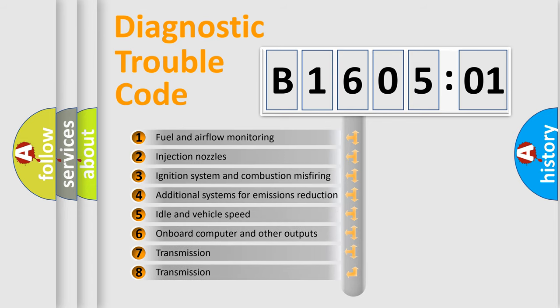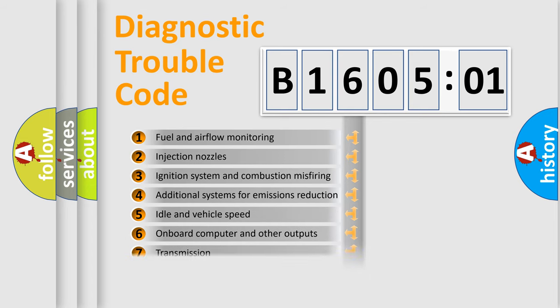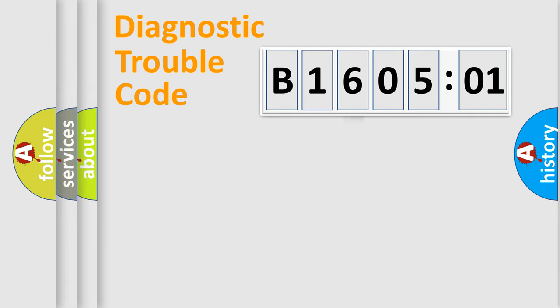The third character specifies a subset of errors. The distribution shown is valid only for the standardized DTC code. Only the last two characters define the specific fault of the group.